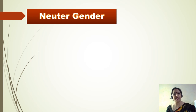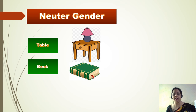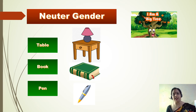A noun is said to be in the neuter gender if it refers to a member of a species which is neither male nor female. Normally, nouns referring to lifeless or non-living objects are called neuter nouns. Like a table lamp kept on a table — both are neuter because they don't have any gender and are non-living things. Other examples are book, pen, and tree.